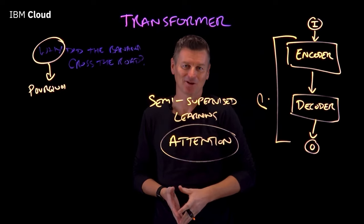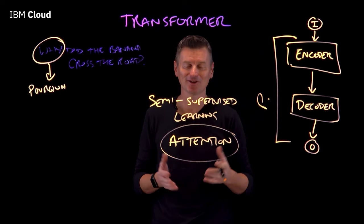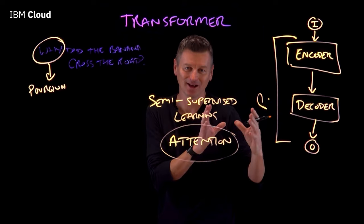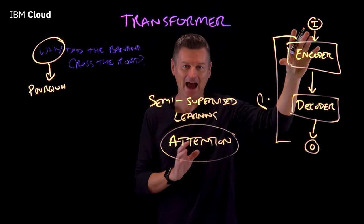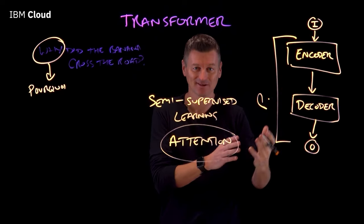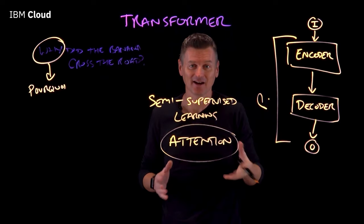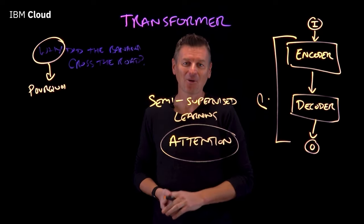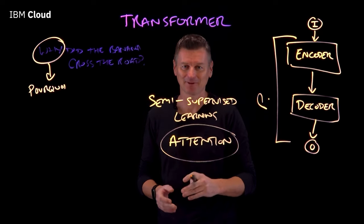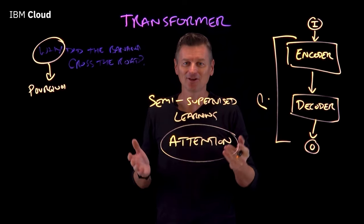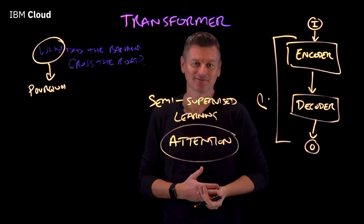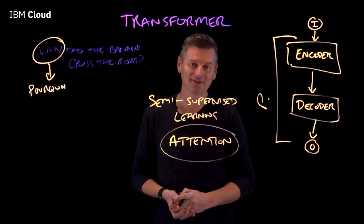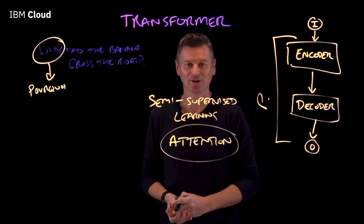Beyond translations, what can transformers be applied to? Document summaries are another great example — you can feed in a whole article as the input sequence and generate an output sequence that's just a couple of sentences summarizing the main points. Transformers can also create whole new documents of their own, for example writing a whole blog post. And beyond just language, transformers have learned to play chess and perform image processing that even rivals the capabilities of convolutional neural networks.